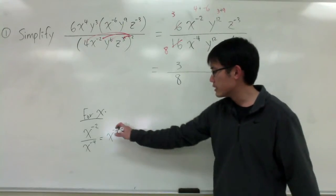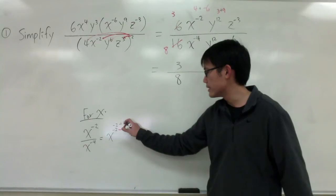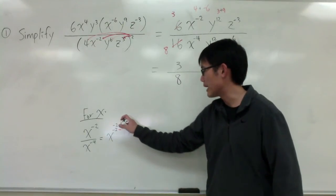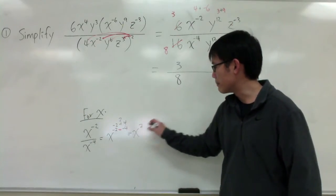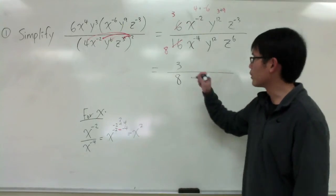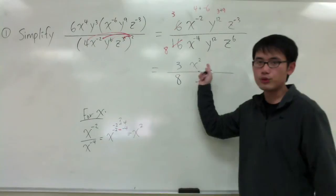And if we work this out, this is like saying negative 2 plus 4. And negative 2 plus 4 is equal to a positive 2. So, I have x to the positive 2 power. And since this is positive, it goes to the top. 3x to the positive 2 power on the top.